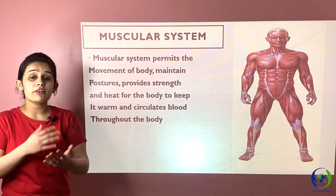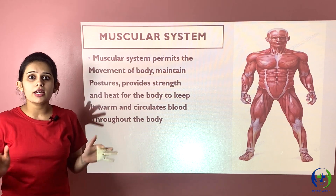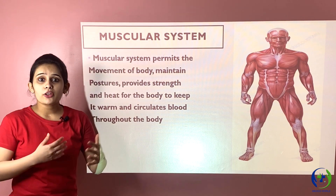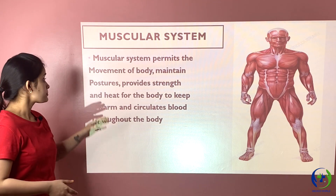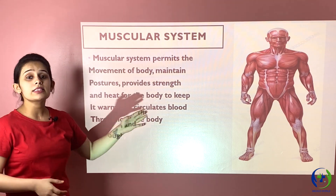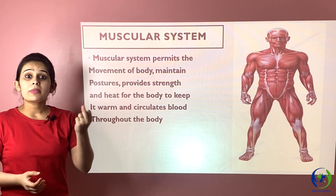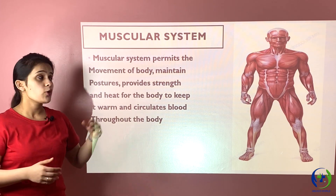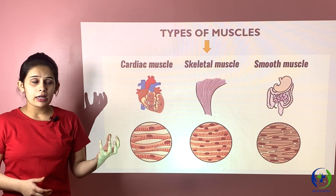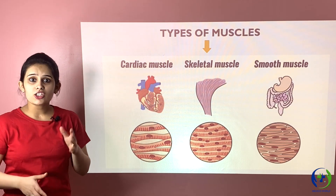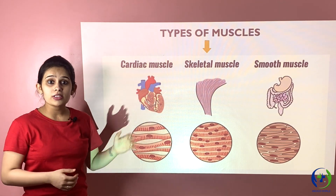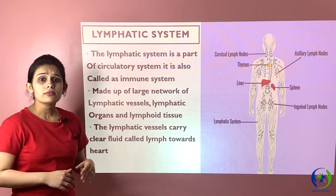The next is the muscular system. Just as we can't imagine a body without bones, we can't imagine one without muscles. The muscular system permits movement of the body, maintains the body's posture, keeps the body warm by preserving the heat-loss and heat-gain mechanism, and helps circulate blood throughout the body — when muscles contract, blood is pushed along. There are three main types of muscles: cardiac muscle, which makes up the heart; skeletal muscles, which are attached to bones; and smooth muscles, which make up the visceral organs.